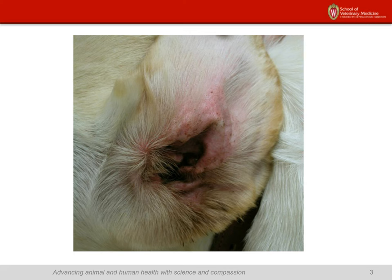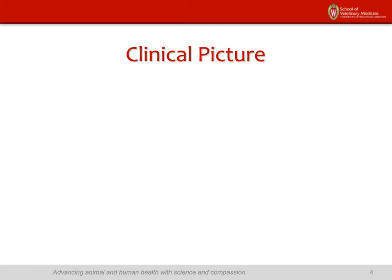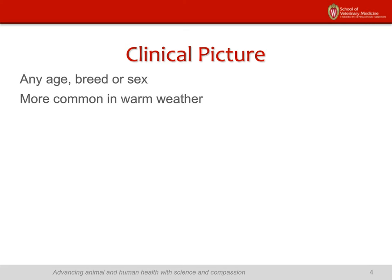This is an ear, and it looks angry — this is a classic ear of otitis. Everyone who has taken care of a dog has seen this type of problem in one shape or another, sometimes less severe, sometimes more severe. It's a huge problem and probably one of the most common problems in veterinary dermatology. Otitis can happen in any age, breed, or sex of dogs. It is more common in warmer weather, and the little ears act like tiny little incubators.